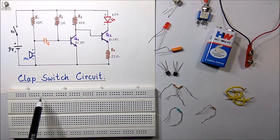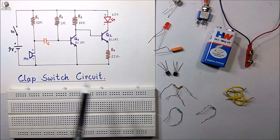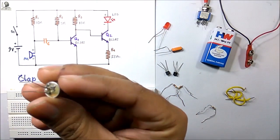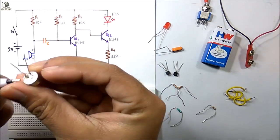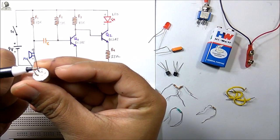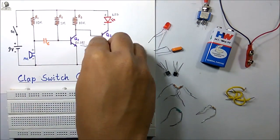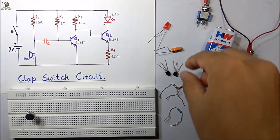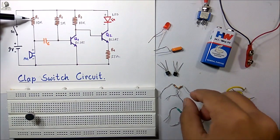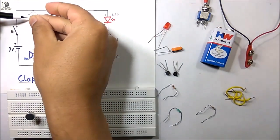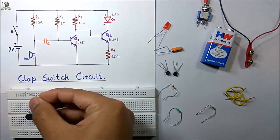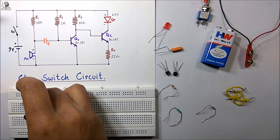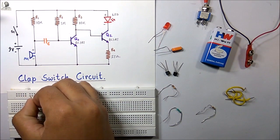Now on this Vero board I will make this rail the positive rail and this rail the negative rail, and according to that I will connect the components. First I am going to connect this DC mic. This is the positive terminal of the mic and this is the negative terminal. I am connecting the 10k ohm resistor R1 with the positive terminal of the mic and the positive rail.